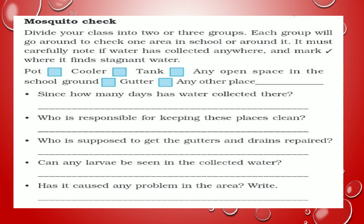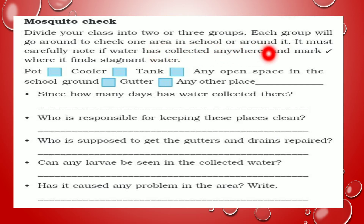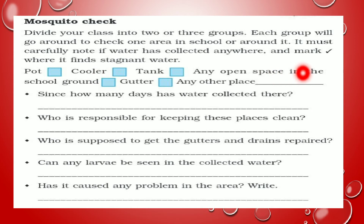यहाँ पर एक survey दिया हुआ है जो आपने अपने groups के साथ मिल कर करना है. Divide your class into two or three groups. अपनी class को दो या तीन groups में बाँट लो. Each group will go around to check one area in school and around it. आपने note करना है कि कहीं पर पानी इकट्ठा है या नहीं. जहाँ भी पानी इकट्ठा हो, उसके सामने mark लगा देना — जैसे pot, cooler, tank, any open space in the school ground, gutter, any other place.